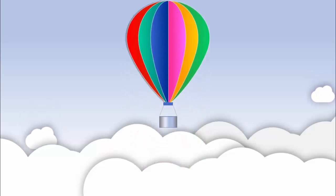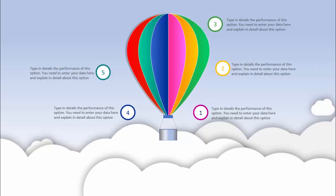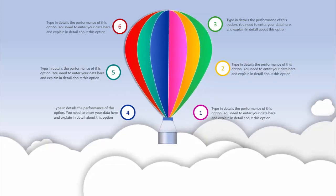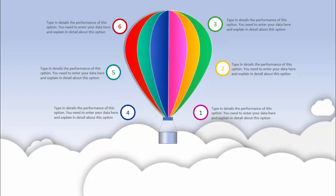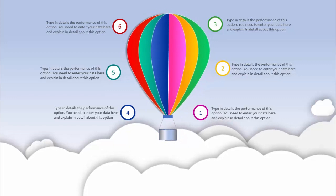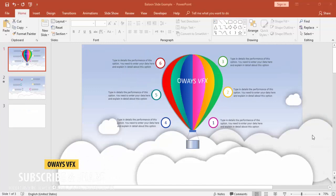Welcome to my YouTube channel OSVFX. In this tutorial I am going to show you how to create a hot air balloon slide animation in PowerPoint. This is how the slide works — when I click, the balloon will appear and it will show you the six options. This slide is very useful for travel and tourism, or you can have your brand displayed on the balloon itself. I have created two slides: without animation and with animation.